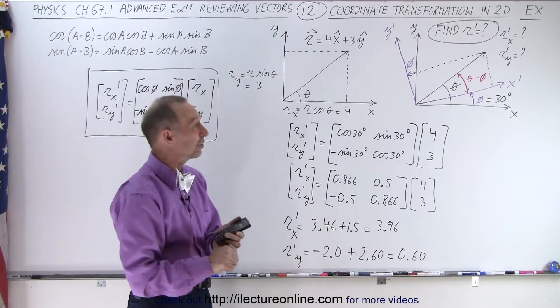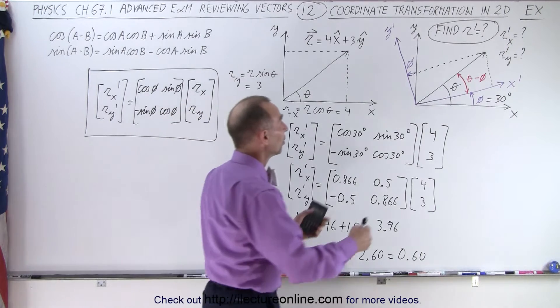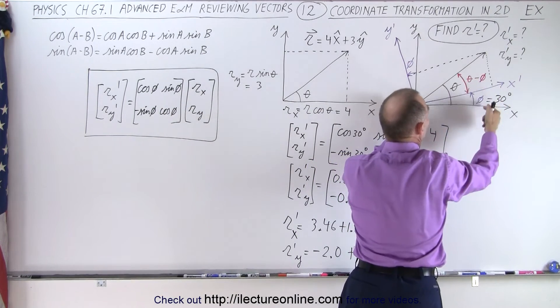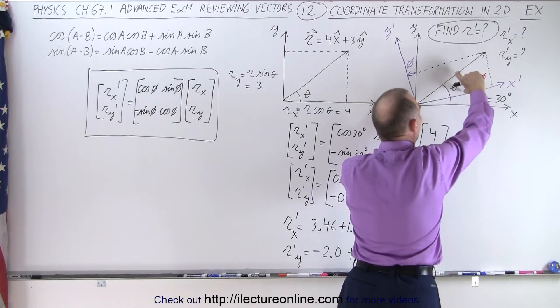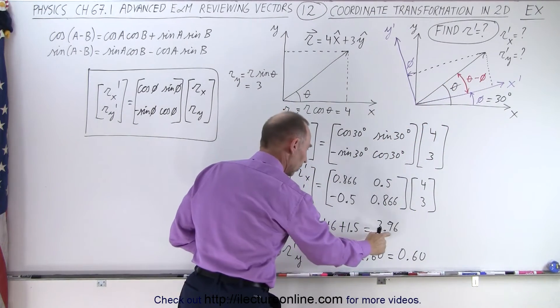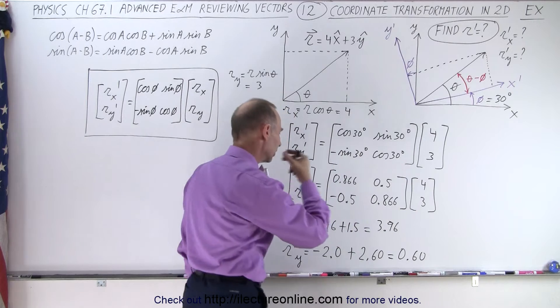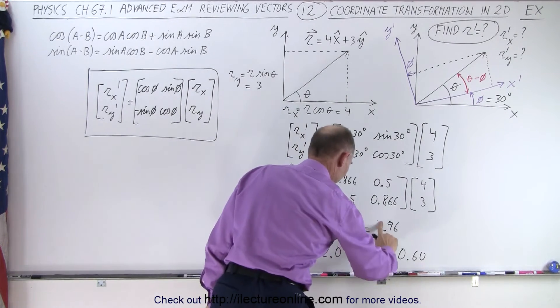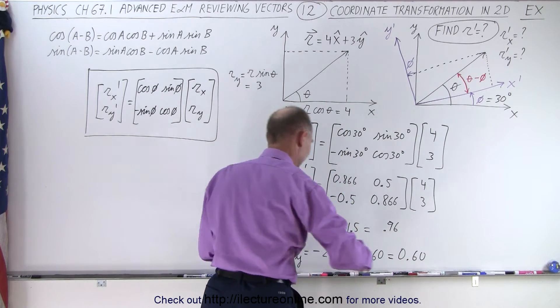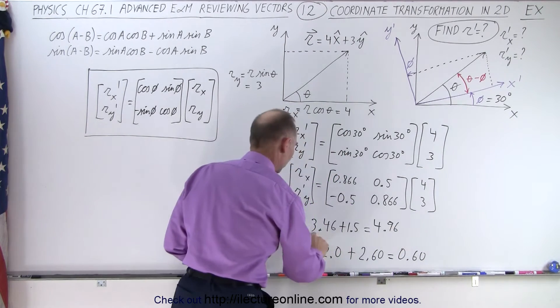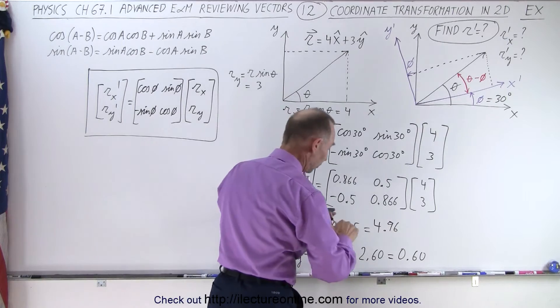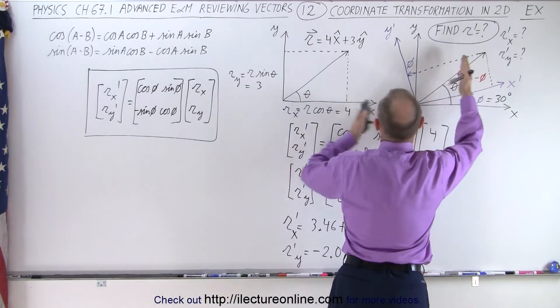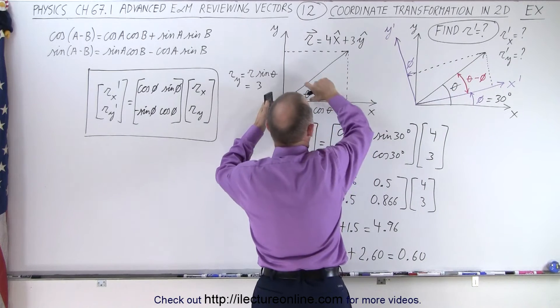And so here we have the X and the Y components of our new vector. Now take a look and see if that visually makes sense. Notice that the X component, well that's going to be larger than before because now we have a smaller angle between there. So 3.96, well let's see here, is that correct? Oh no, no, no, that's not 3.96, that's 4.96. 4 point, because 3 plus 1 is 4, yeah, 4.96, good thing that I checked.